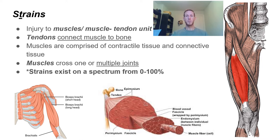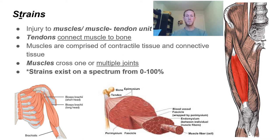Muscles cross one or multiple joints. Muscles that typically cross multiple joints — for example, the rectus femoris, one of our quadriceps muscles — are typically more susceptible to injury, and we see more strains in those muscles. Strains exist on a spectrum from zero to 100%, even though we grade them one to three, similar to ligaments.